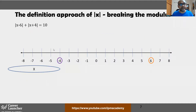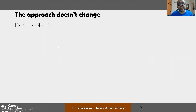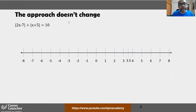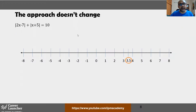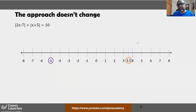Let's take another example. Here the definition approach requires no modification — you just equate each expression inside the modulus to zero. This gives x = 7/2 (which is 3.5) and x = −5 as the two boundary points, creating three regions. The first region is x ≥ 3.5.